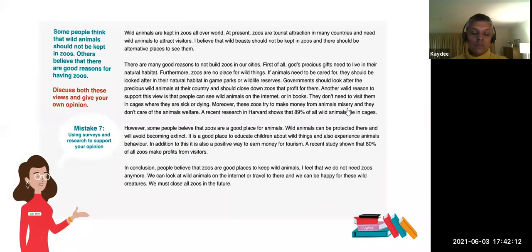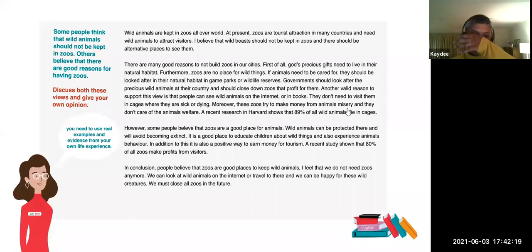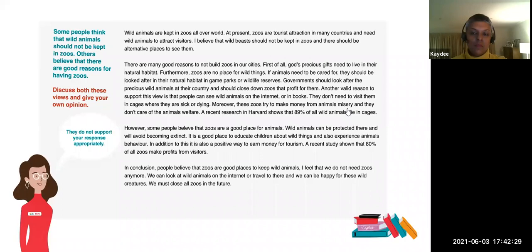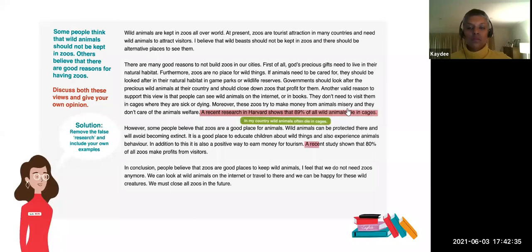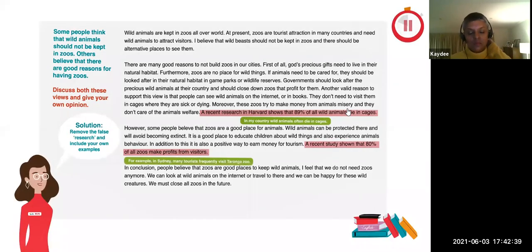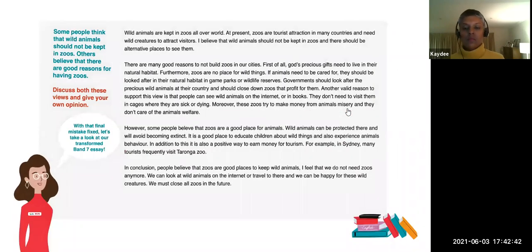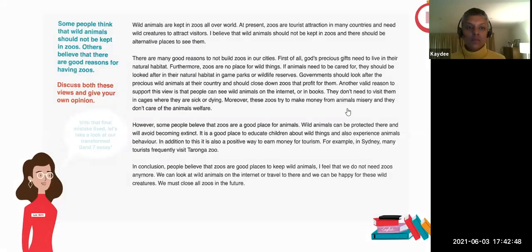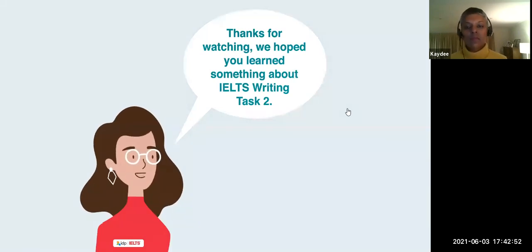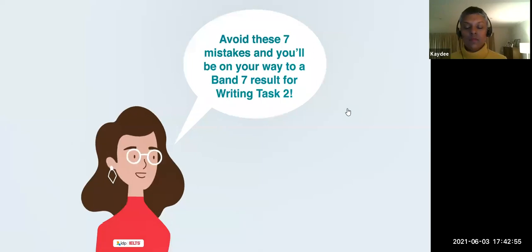Mistake seven: using surveys and research to support your opinion. You need to use real examples and evidence from your own life experience. Examiners cannot check if your research and survey examples are real, and they do not support your response appropriately. Solution: remove the false research and include your own examples. With that final mistake fixed, let's take a look at our transformed band seven essay. Avoid these seven mistakes and you'll be on your way to a band seven result for writing task two.